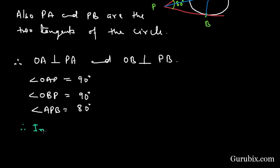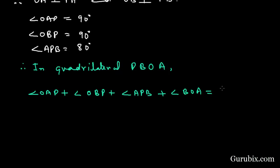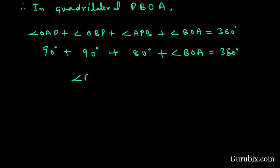We are given that angle APB is equal to 80 degrees. Therefore, in quadrilateral PBOA, the sum of angles OAP plus angle OBP plus angle APB plus angle BOA is equal to 360 degrees. This angle is 90 degrees, this is also 90 degrees, and this is given as 80 degrees. We have to calculate angle BOA. So angle BOA equals 360 minus 260, which gives angle BOA equal to 100 degrees.